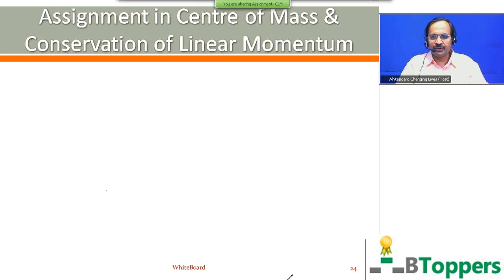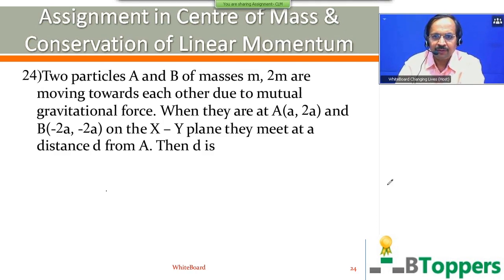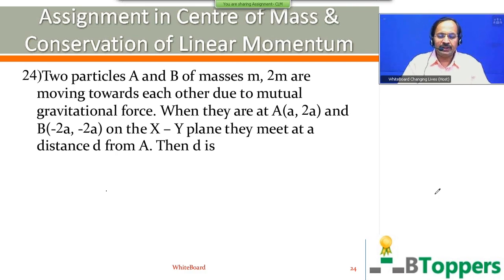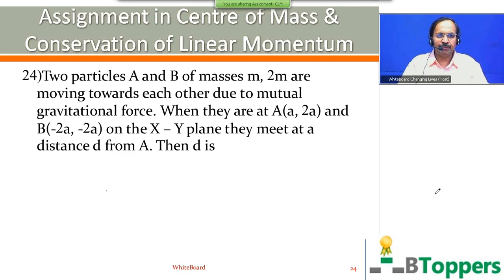So I am going to show you question number 24 on the screen. Two particles A and B of masses M and 2M are moving towards each other due to mutual gravitational force. When they are at A within bracket (a, 2a) and B within bracket (-2a, -2a) on the XY plane, they meet at a distance D from A. Then D equals?